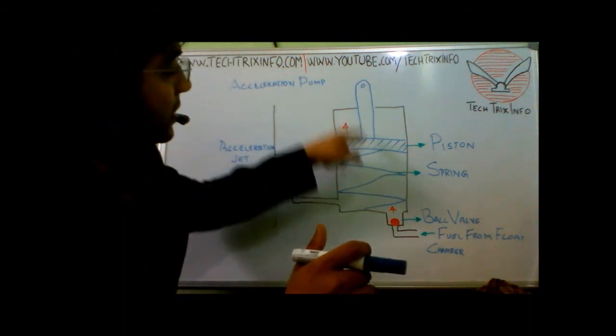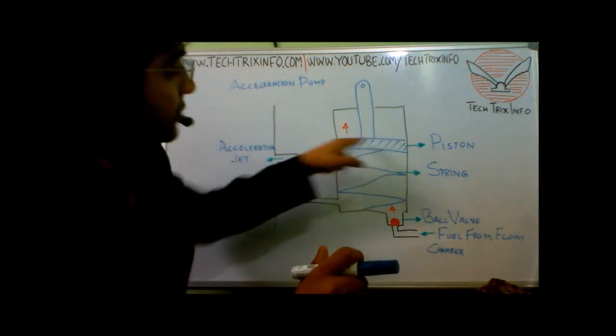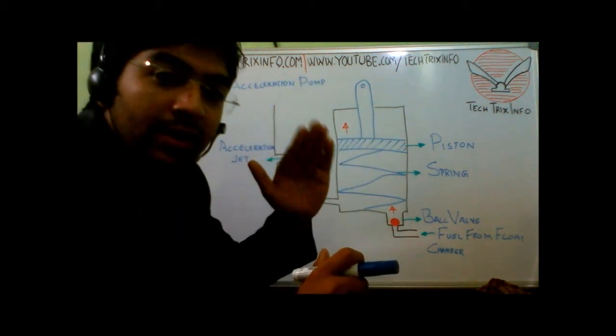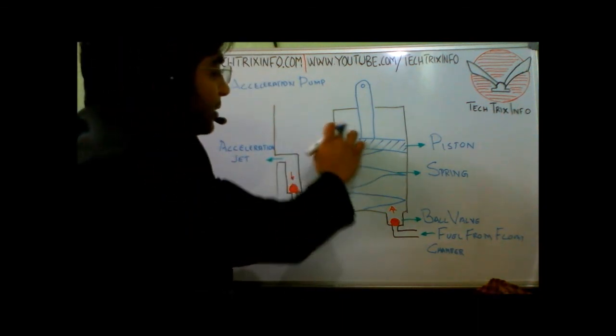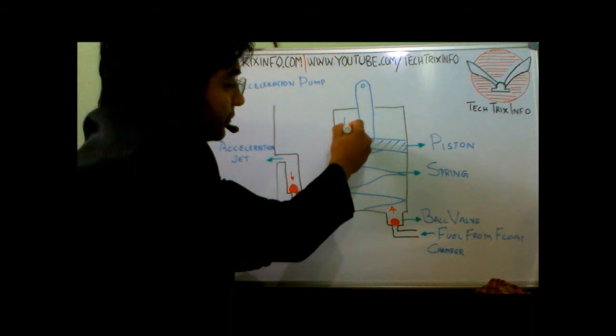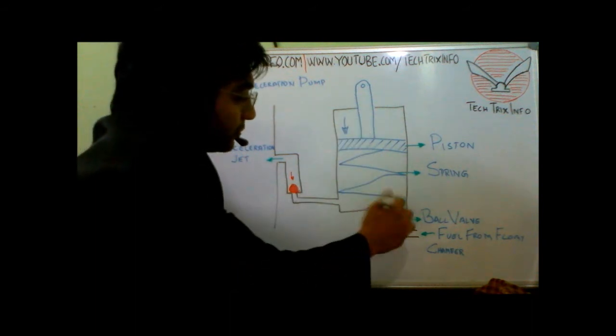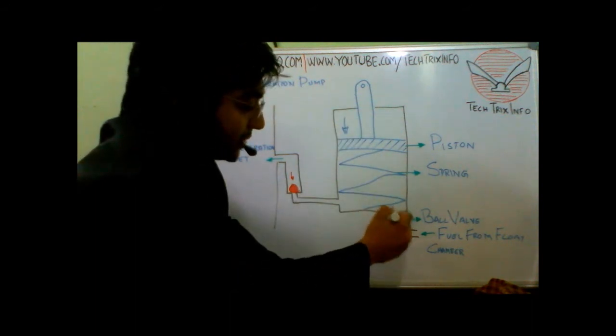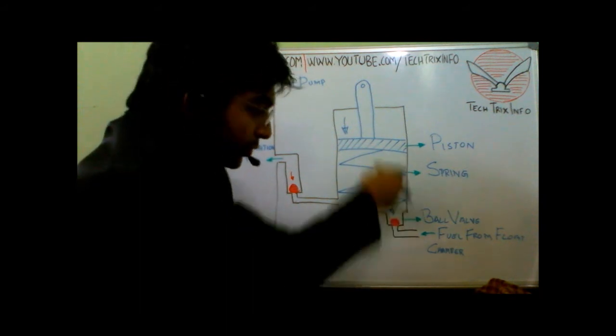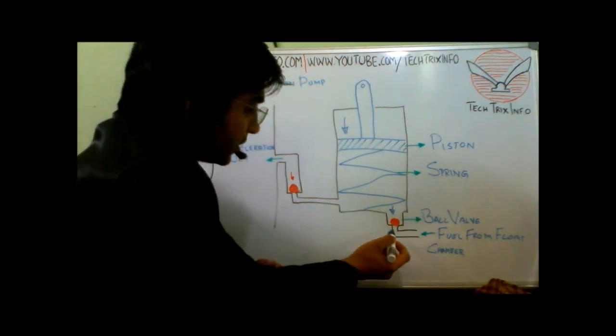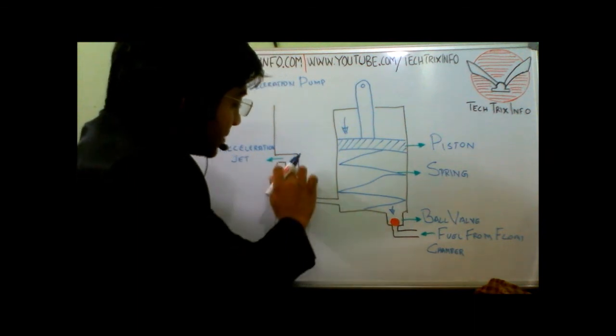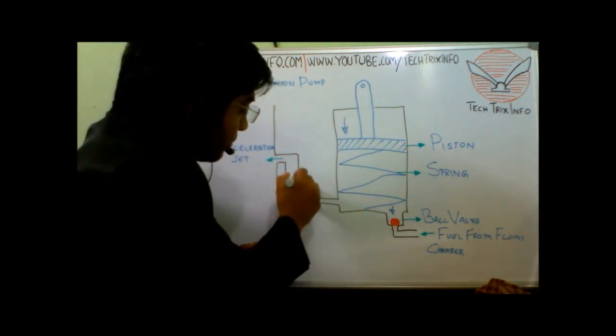This connecting rod of this piston is connected towards the accelerator pedal. When we press the accelerator pedal, this piston moves down. We have a pressure on this valve and it will be closed due to the pressure coming downward. This valve will be in closed condition and we have a pressure from here acting on this valve upward.